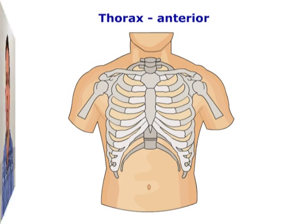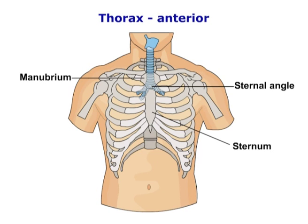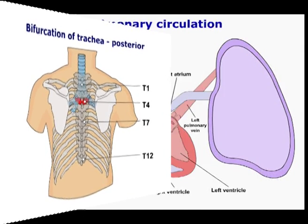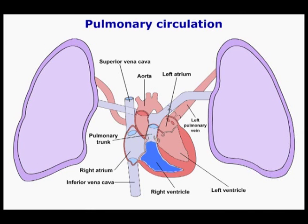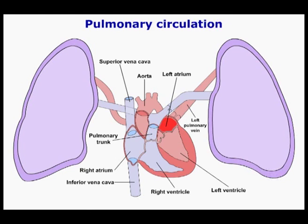Let us review the different components which make up this system and how these function. The trachea descends anterior to the esophagus until it bifurcates into the left and right primary bronchus. Anteriorly, the division takes place behind the sternal angle. Posteriorly, the division takes place at the level of the 4th thoracic vertebra. Oxygenated blood is returned to the heart via the left and right pulmonary veins.